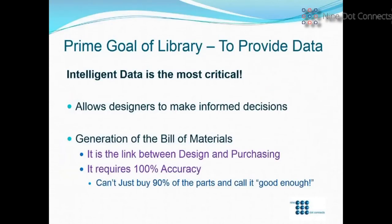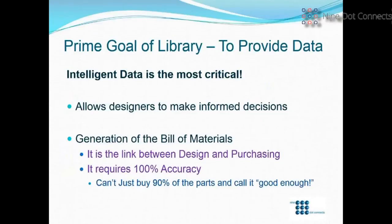Intelligent data is really critical. It allows designers to make informed decisions — if the data is in the library, you can make a good decision about the part you want to use. And then there's the generation of the bill of materials, which is where the link between design and purchasing begins — where the rubber meets the road. It requires 100% accuracy. I've had arguments with purchasers at prior jobs saying 'we got 90% of your parts' — but we need everything in order to build a complete circuit.